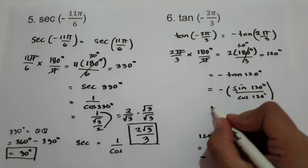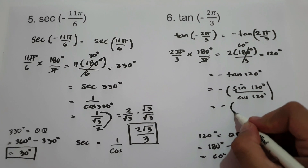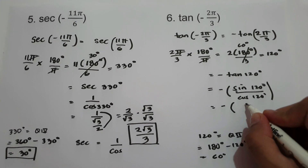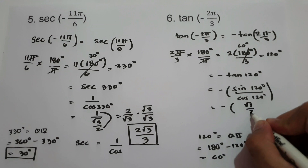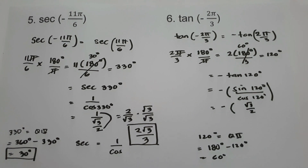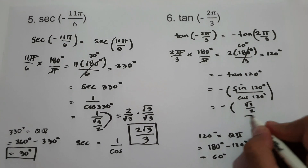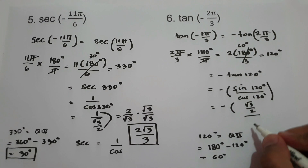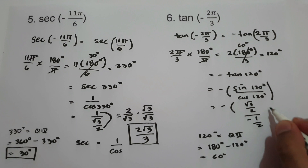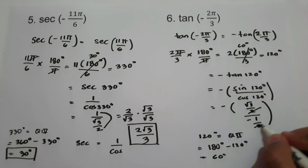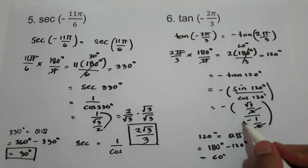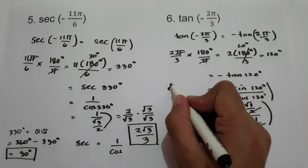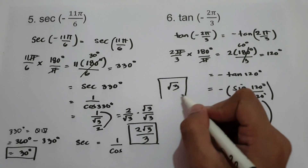Tangent is sine over cosine. Sine(120°) in quadrant 2 is √3/2, and cosine(120°) in quadrant 2 is -1/2. Cancel the 2s, and negative divided by negative is positive: √3/1 = √3. And this will be our answer.